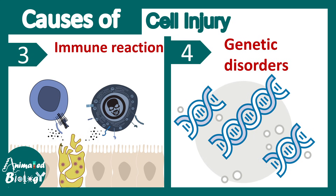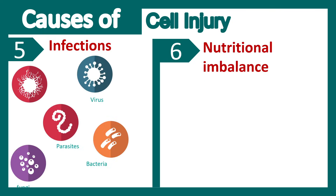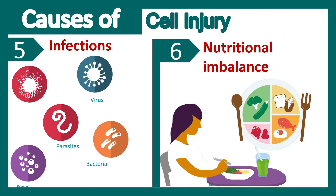There could be immune reactions that lead to killing of one particular cell type. There could be genetic disorders which make cells more prone to stress and decrease their ability to adapt. There are also several causes involving infection — like viral, parasite, or bacterial infection. There could also be nutritional imbalance that can cause cell injury.